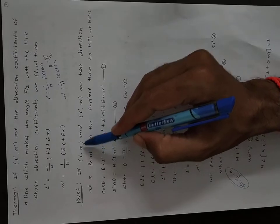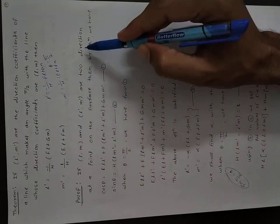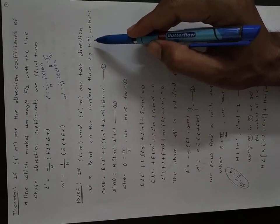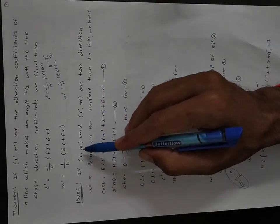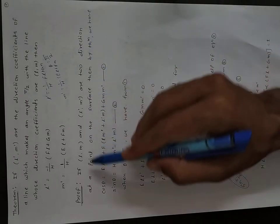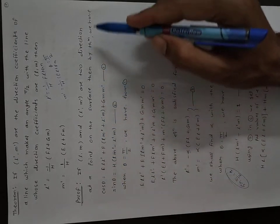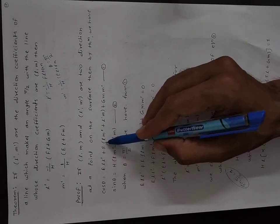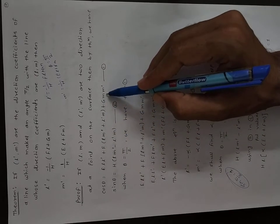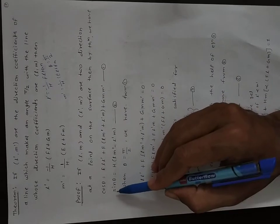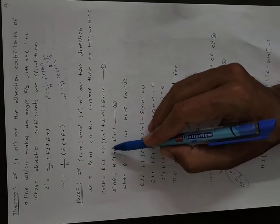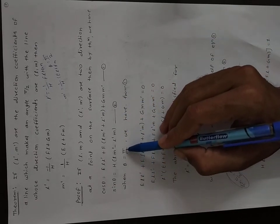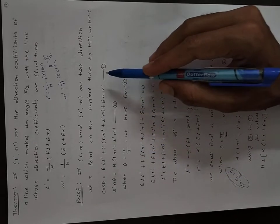If L, M and L', M' are the two direction coefficients at the same point on the surface, then by the theorem we have: cos θ = E·L·L' + F(LM' + L'M) + G·M·M' — equation number 1. And sin θ = H(LM' − L'M) — equation number 2. When θ = π/2, from equation 1,